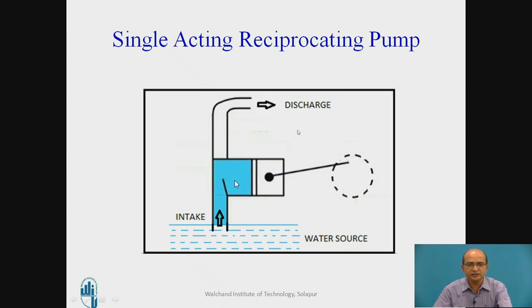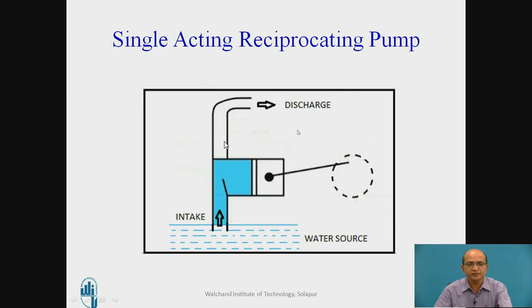This problem of intermittent supply can be overcome by two methods. One is to use a double acting arrangement, and the second is to provide an air vessel. This air vessel is provided on the delivery side. When discharge is occurring, water is stored in the air vessel. When suction is going on and no discharge is occurring, the water from the air vessel rushes to the discharge pipeline. This overcomes the intermittent supply to some extent, but the best method is the double acting reciprocating pump.